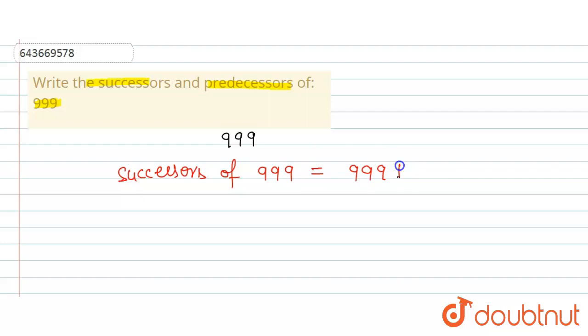999 plus 1 is equal to 1000. And now we will find the predecessor.